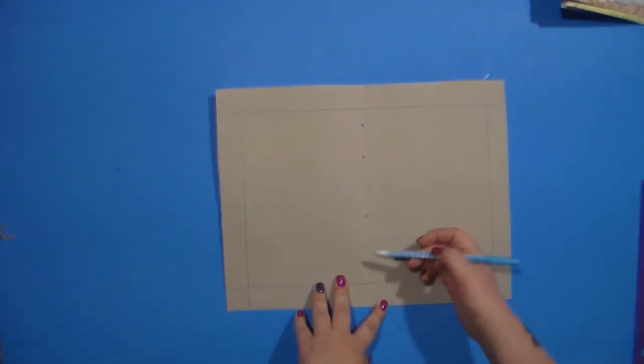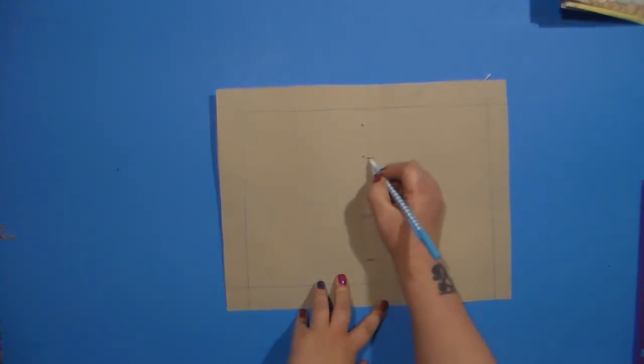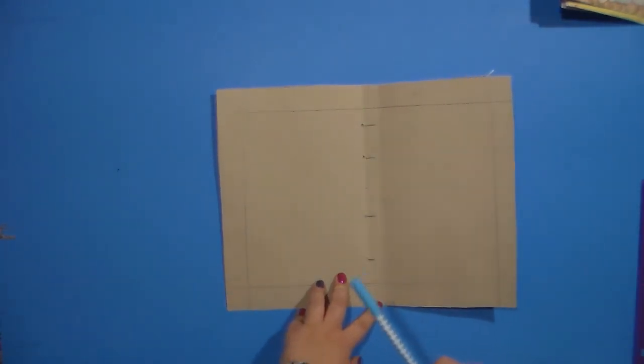Next you're going to want to take and poke four holes and I have one there, one there, one there, and there. Do not poke any extra holes because we're going to be doing a pamphlet stitch very easy and it'll keep your pages together just fine.